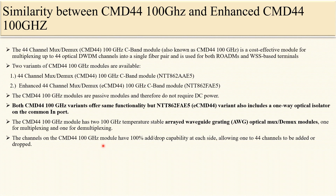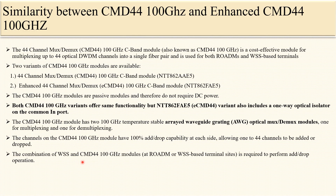Both CMD44 and enhanced CMD44 modules provide the ability for all 44 channels to be added or dropped. The combination of WSS and CMD44 100 GHz modules at a ROADM or WSS-based terminal site is required to perform add/drop operations. Add/drop operations means adding any channel to the DWDM system or dropping any channel from the DWDM system — the combination of WSS and CMD44 is required for this.